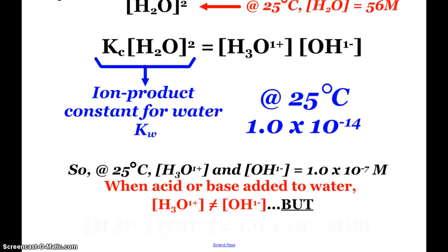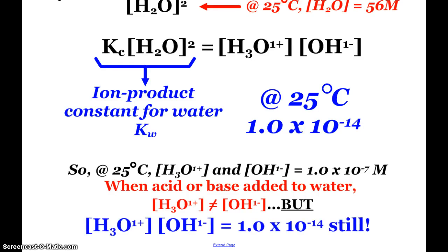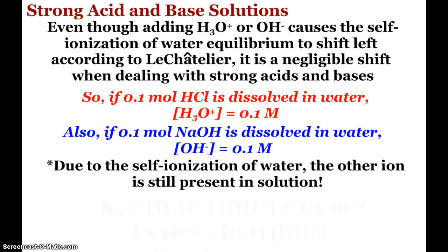And so what that means is that 25 degrees Celsius, the hydronium and hydroxide concentrations are each 1 times 10 to the negative 7 molar. Now, when an acid or base is added to water, we no longer have hydronium and hydroxide concentrations equal. But we will still have the fact that when you multiply those concentrations together, it's going to equal Kw, 1 times 10 to the negative 14. So let's investigate that.